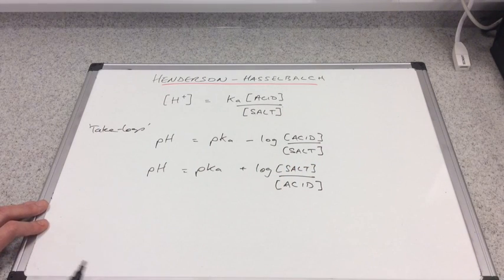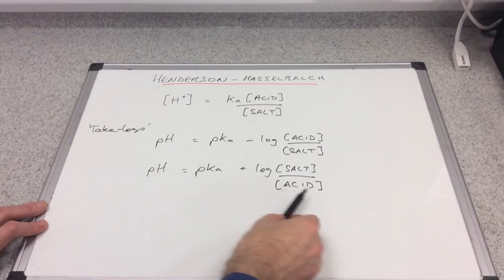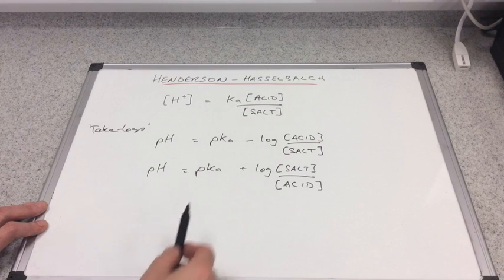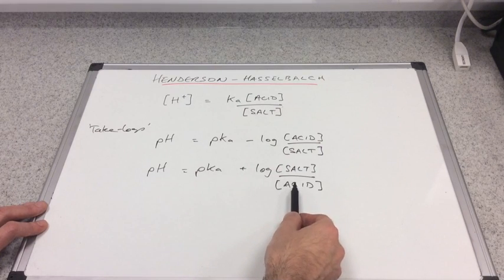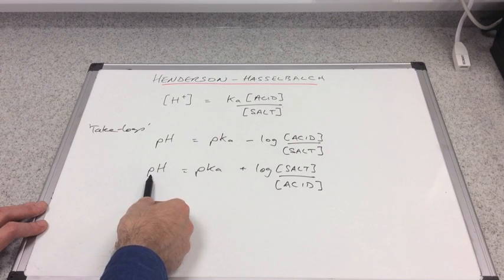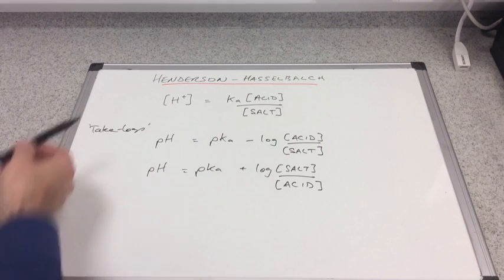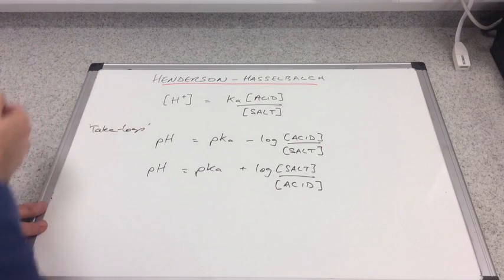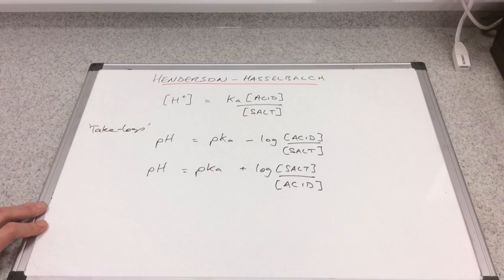You can see a possible advantage of this equation, and that's because when you plug the numbers in you get your pH answer straight out of this expression, whereas when you do this method you have to minus log your H+ concentration to turn it into pH.